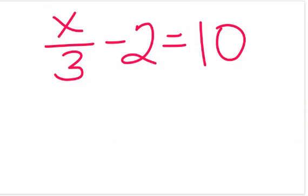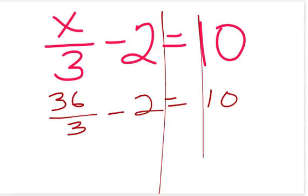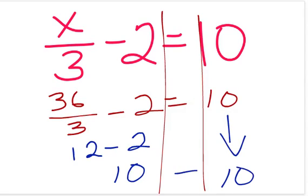Once again, we need to check our work by substituting in 36 for x. Let's see how we did. 36 divided by 3 is 12. Bring down the minus 2. 12 minus 2 is 10, and we bring down the 10 on the right side, and indeed they are equal. If you got x equals 36, you are correct.